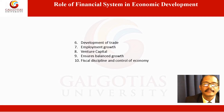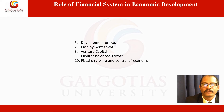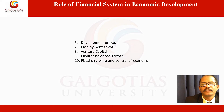Next, the financial system ensures balanced growth. Economic development requires balanced growth, which means growth in all sectors simultaneously. The primary sector, secondary sector, and tertiary sector all require adequate funds for their growth. The financial system in the country will be geared up by authorities in such a way that available funds will be distributed to all sectors, ensuring balanced growth across industries, agriculture, and the service sector.